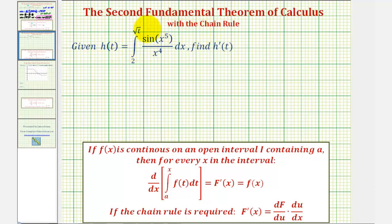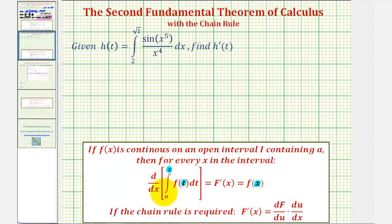To do this, we'll be applying the Second Fundamental Theorem of Calculus, stated here below, where the derivative with respect to x of the integral of f of t from a to x is equal to f of x. We can think of the derivative and integral undoing each other, and therefore to evaluate this, we substitute the variable x into the integrand function for t, giving us f of x. Notice how the lower limit of integration is a constant, and the upper limit of integration is just x.